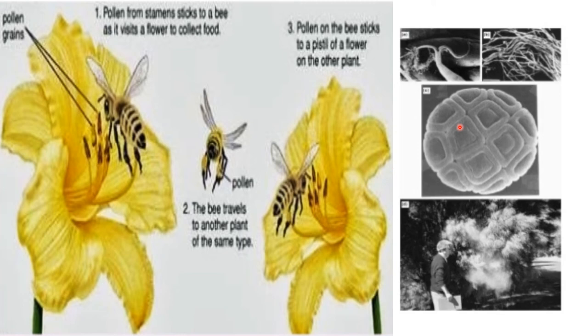Cell number varies at anther dehiscence. Two-thirds of angiosperms release bicellular pollen grains with a vegetative cell containing control of tube growth and metabolism, and a generative cell which divides after pollen germination into two sperm cells. The remaining third release tricellular pollen grains with a vegetative cell and two sperm cells, as the generative cell divides before pollen dispersal and germination.